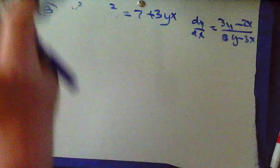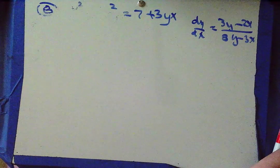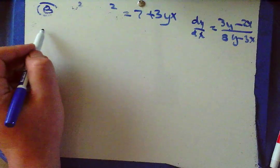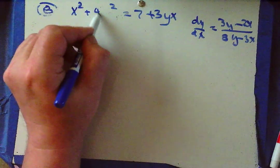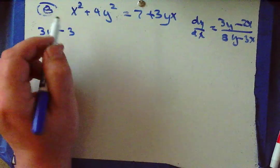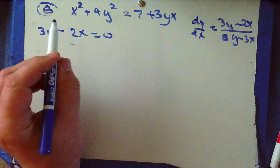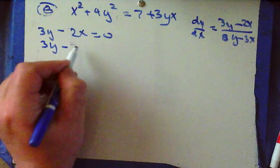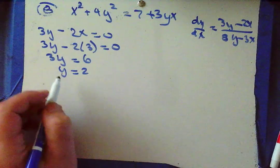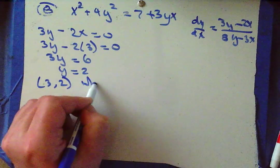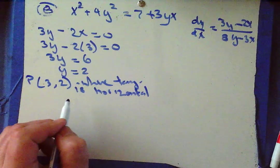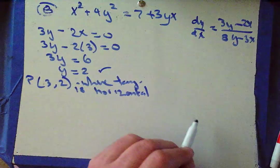Part b: show that there is a point P with x-coordinate 3 for which the tangent line to the curve is horizontal. If the tangent line is horizontal, dy/dx equals 0, which means 3y minus 2x equals 0. With x equals 3: 3y equals 6, so y equals 2. So there exists the ordered pair (3, 2) where the tangent is horizontal. There's part b.